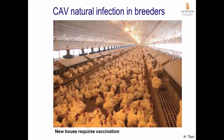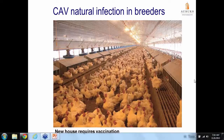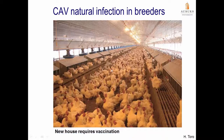Some poultry producers like to base their exposure to CAB on natural infection. This is because every house will be positive for CAB, unless the house is new or recently manufactured. The problem with natural infection is that not all houses have the same concentration of virus per square meter or square feet, and there will be differences within the house in terms of exposure of the birds to the virus.